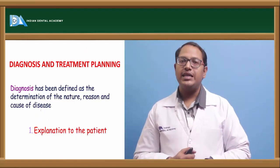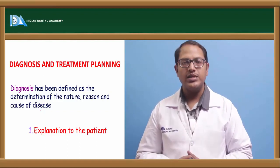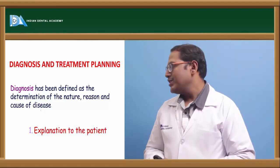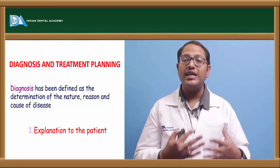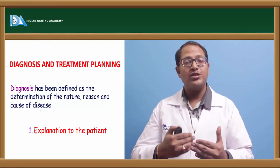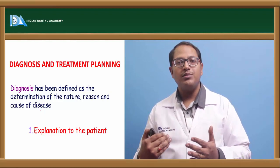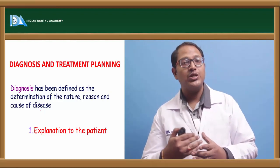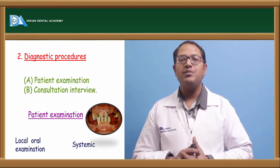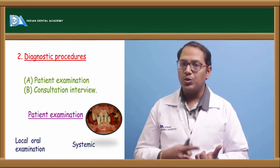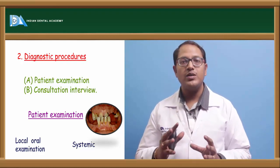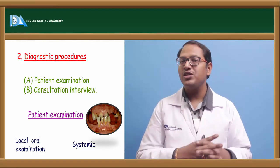Diagnosis and treatment planning in these patients is very important. Diagnosis is the decision and determination of the nature and cause of the severity of the disease. First, you need to explain to the patient why we are giving an immediate denture, what the outcomes are that the patient is not supposed to expect, and what discomfort the patient may have. Explanation to the patient is very important. Coming to the diagnostic procedure: examination of the patient — if there is any bone defect or mucosal defects, you cannot go ahead with immediate dentures. Consultation, explanation, and awareness of the use of immediate dentures is also important.